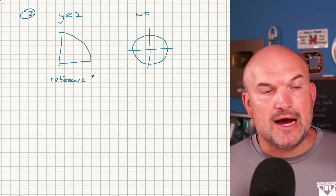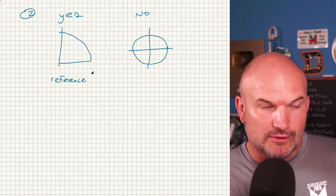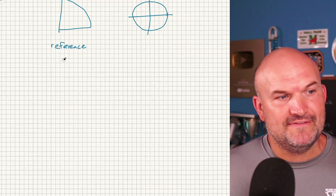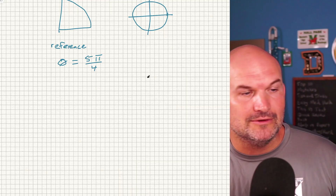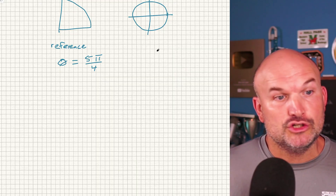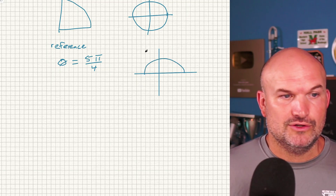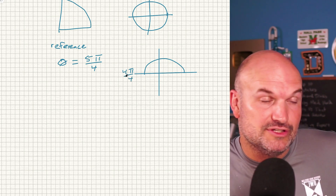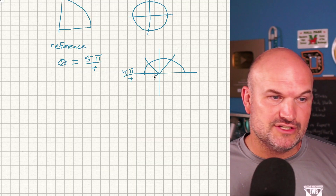What you need to know is: what is the reference angle? The reference angle is the acute positive angle between the terminal side of your angle and the x-axis. Let's go through an example. If I give you θ = 5π/4 — that's 225 degrees — let's graph this. We know we're on the x-axis, we go halfway around the circle, which is π, or 4π/4. Breaking into four sections: at 5π/4, that's just one extra section past π.